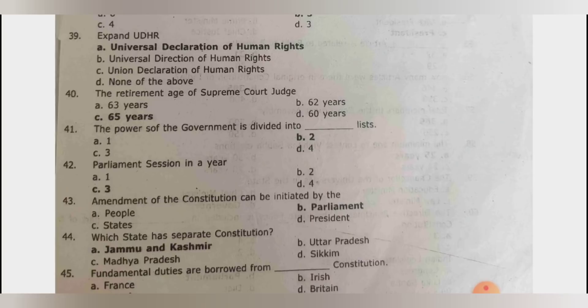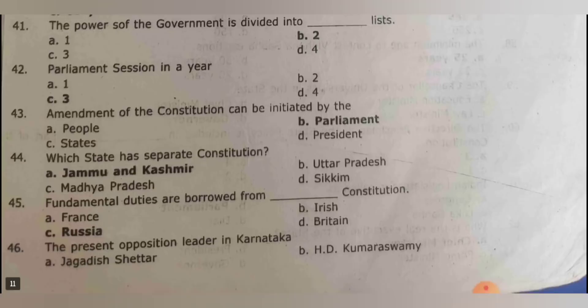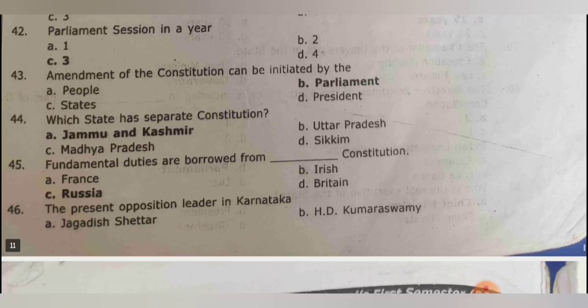The power of government is divided into 3 lists: state list and union list, plus a concurrent list. Parliament has 3 sessions. Amendment of the constitution is initiated by Parliament. Which state has a separate constitution? Because of Article 370 being amended in 2020, Jammu and Kashmir has become a union territory and no longer has a separate constitution.